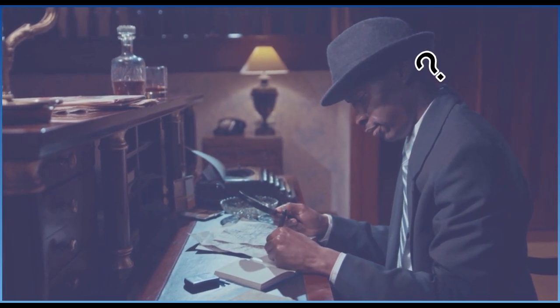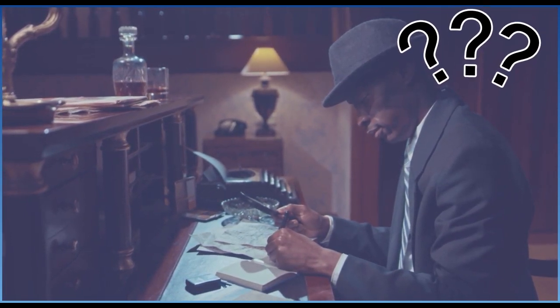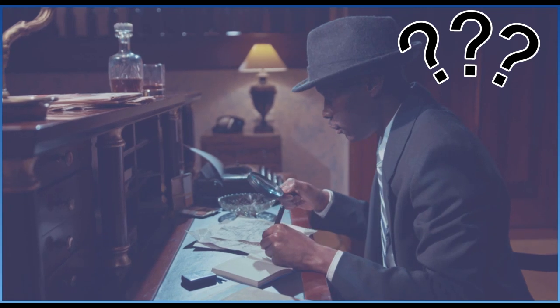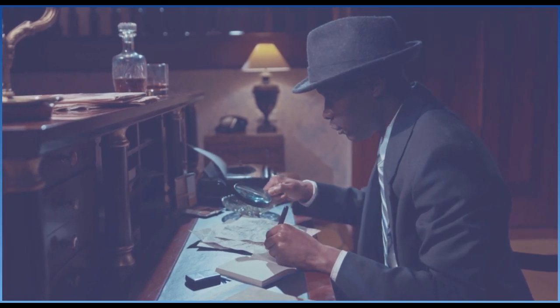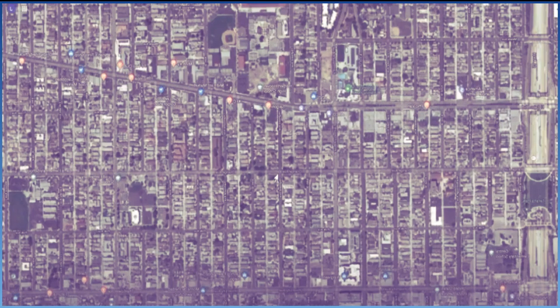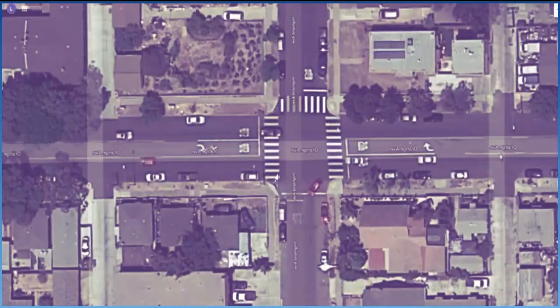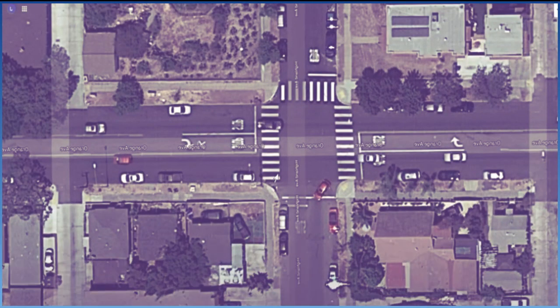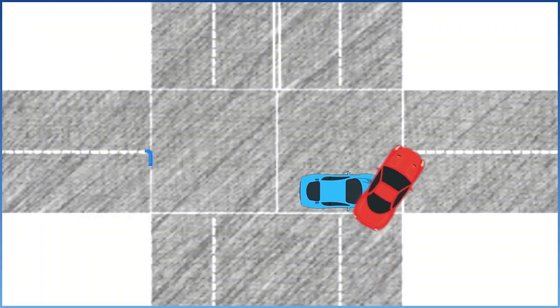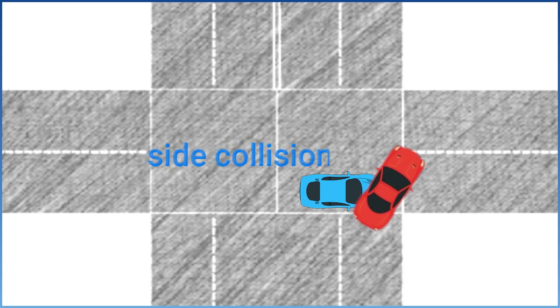Then they edit the crash site scenarios. A crash investigator is investigating a crash site. She has drawn a diagram of the cars just before the collision. The red car drove through the intersection while the blue car continued in a straight line. The blue car hit the red car.